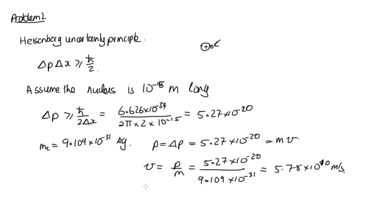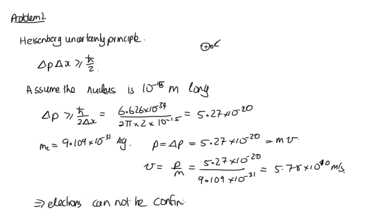This tells us that: (a) this calculation is wrong — we'd need to use the relativistic form of momentum — and (b) we can't have an electron traveling at relativistic speeds and yet confined within the nucleus. So this tells us that electrons cannot be confined to the nucleus, and something else must be going on.